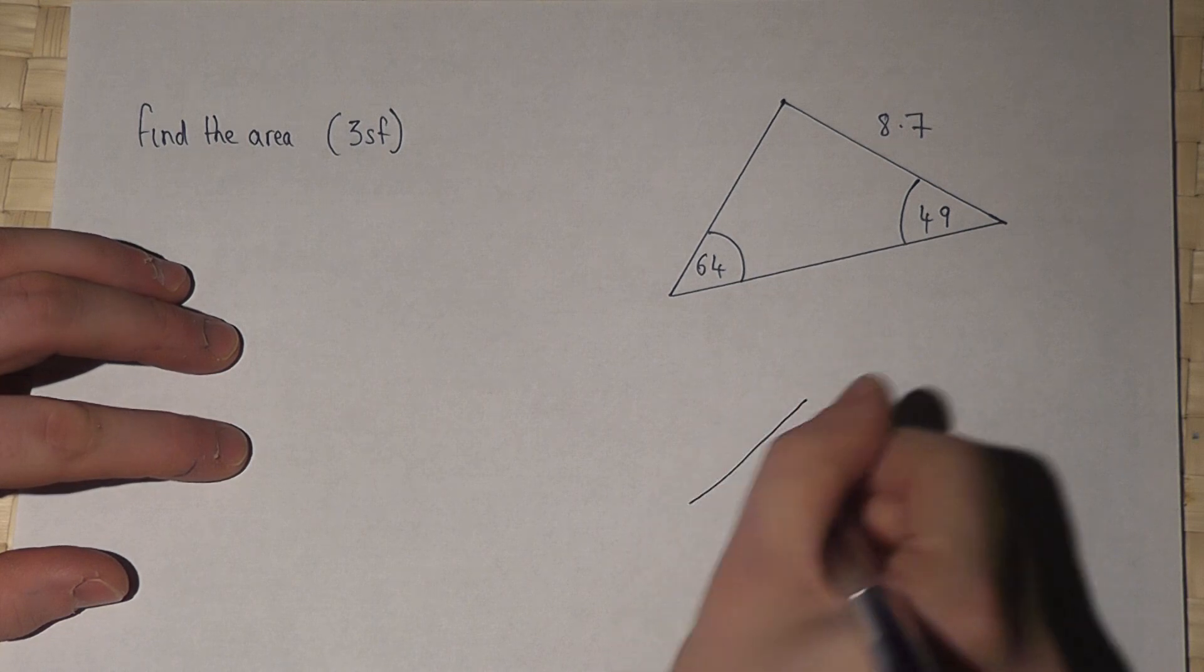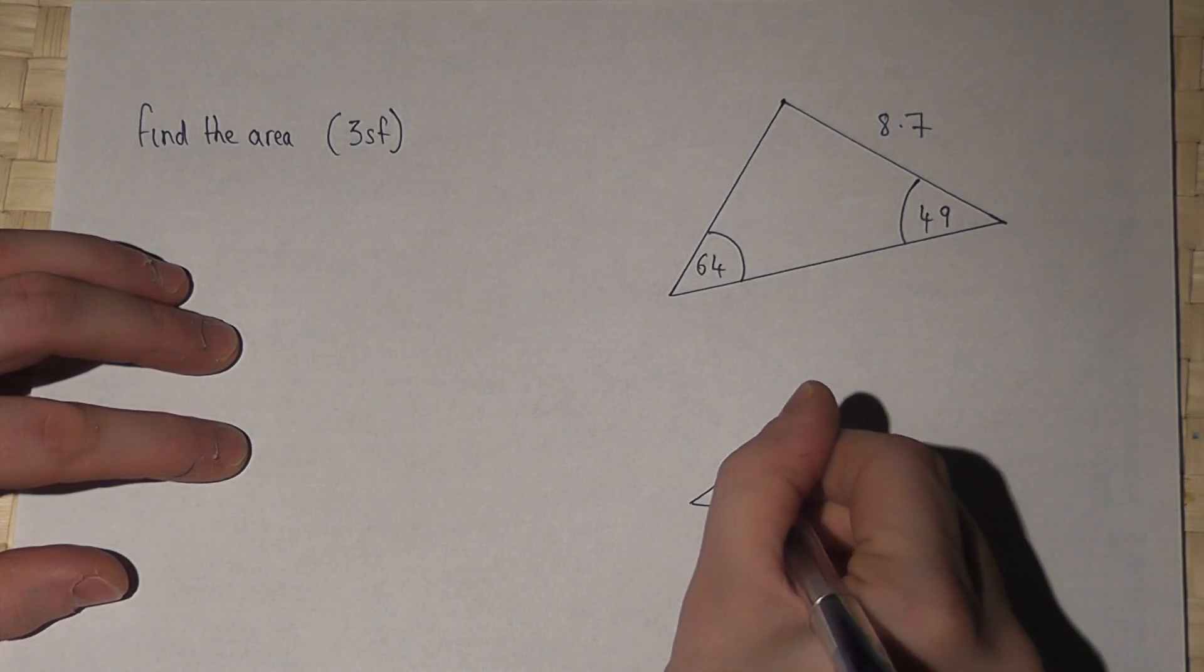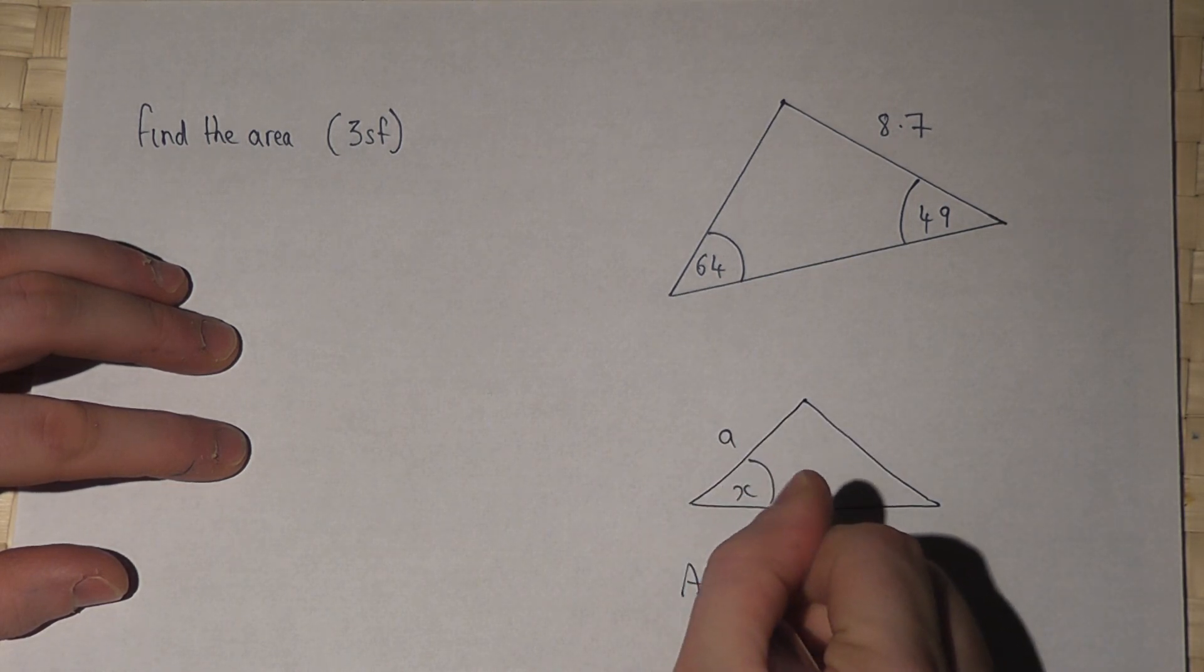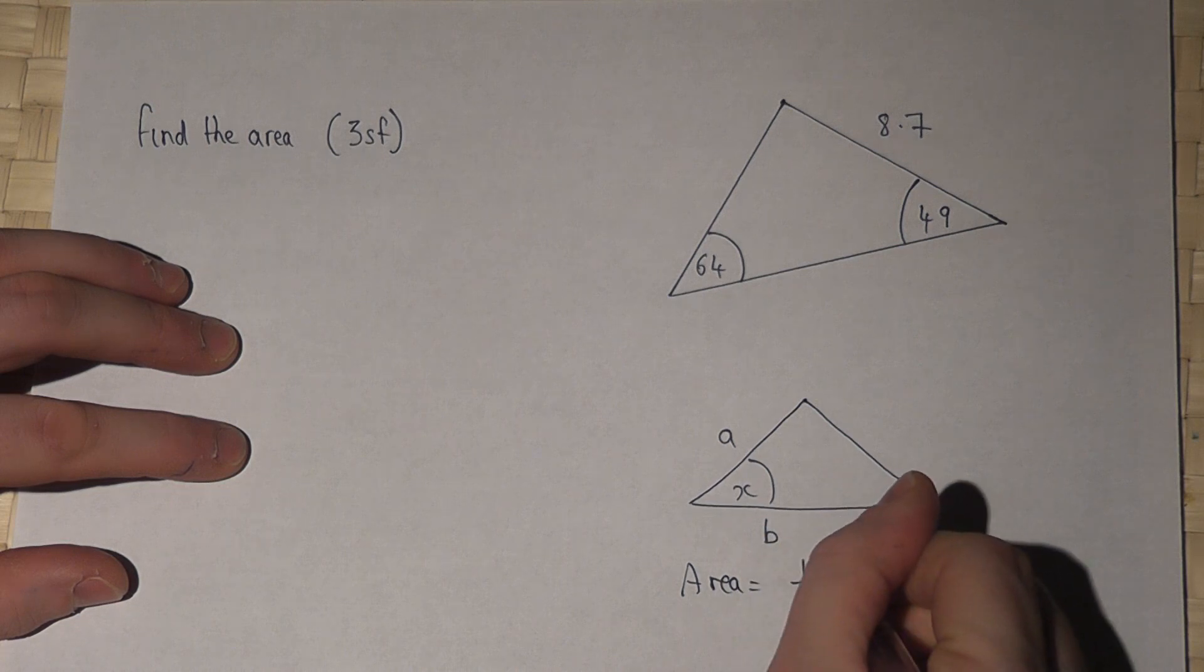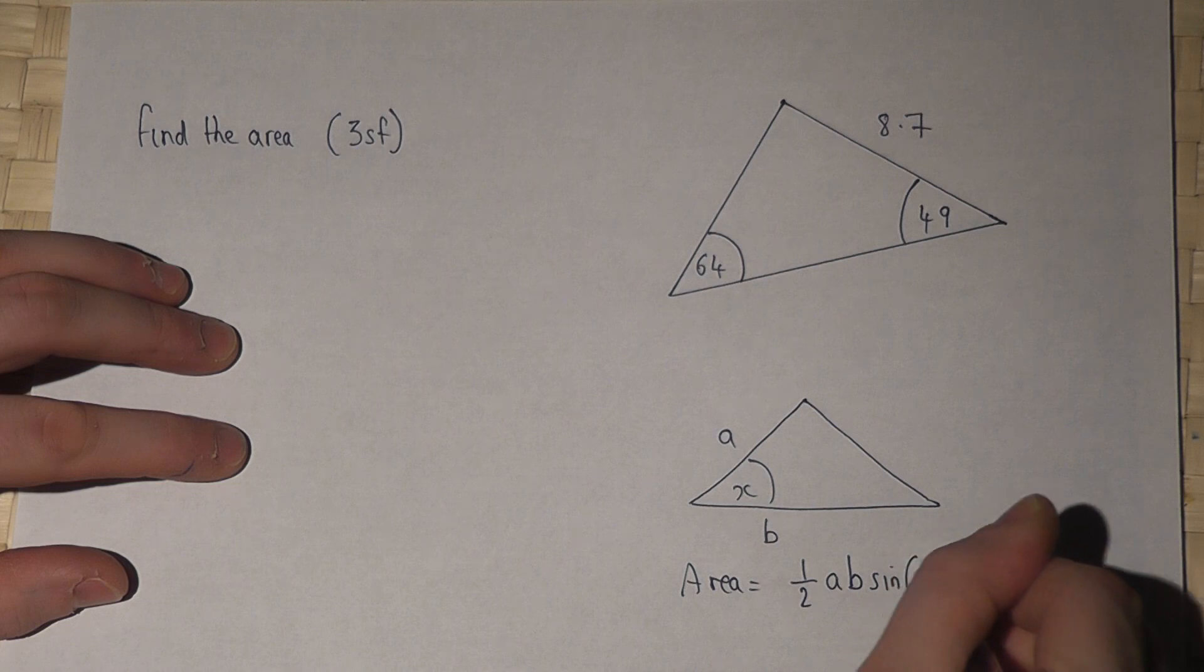Now generally, if we know a triangle, and if we know an angle and the two sides which form the angle, then the area will equal a half A times B times sine of the angle.